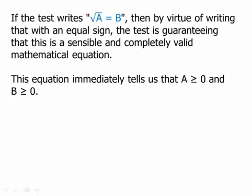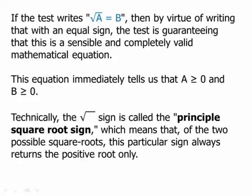If the test writes the equation square root of a equals b, then by virtue of writing that with an equals sign, the test is guaranteeing this is a sensible and completely valid mathematical equation. So this equation immediately tells us that a must be either positive or equal to 0, and b also must be positive or equal to 0. Technically, the radical sign is called the principal square root sign, which means that of the two possible square roots, this particular sign only returns the positive root.